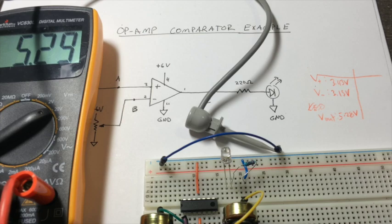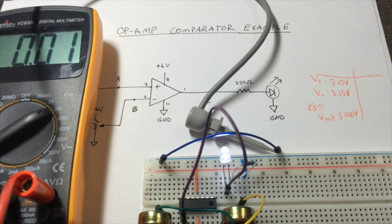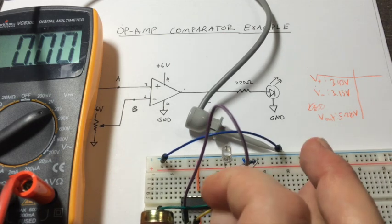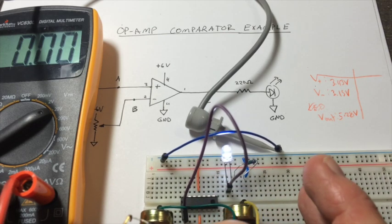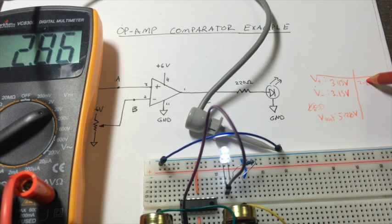Alright, now let's just change this. Oh, now notice that it's off. So let's check this. What is the voltage here now? We see that it's 2.85. Now remember that pin 3 was our non-inverting voltage, which is represented by the plus sign.